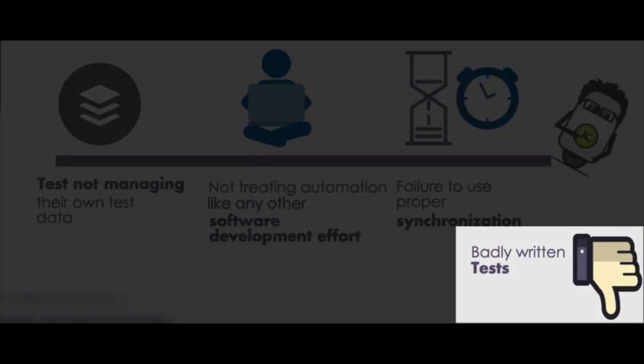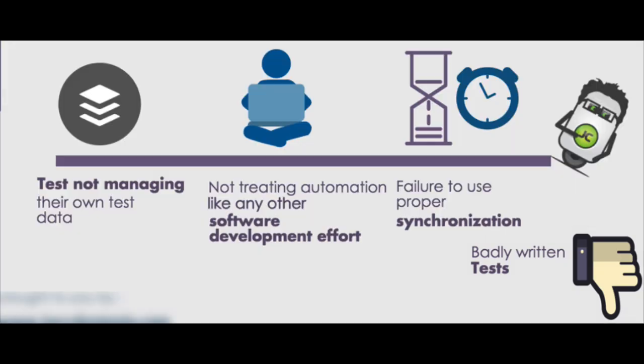The tenth reason for flaky automated tests is badly written tests. Just having junior people creating tests because you think it's not a real development activity is going to cause you issues, because badly written tests are probably one of the main reasons for flaky tests.